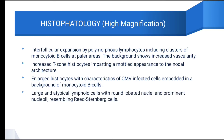Lastly, there are Reed-Sternberg-like cells, which are large and atypical lymphoid cells with round to lobated nuclei and prominent nucleoli.